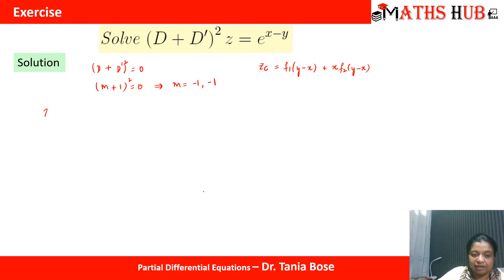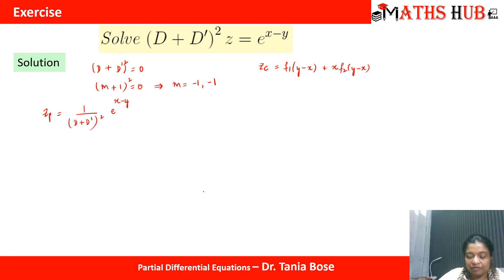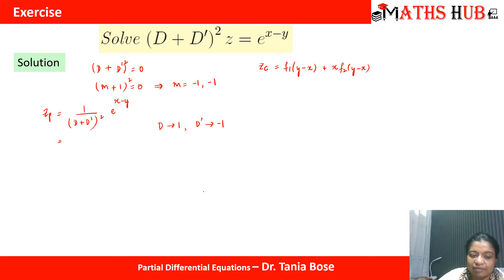Now let us calculate the particular solution: z_p = 1/(D + D')² · e^(x−y). We replace D with 1 and D' with −1. Substituting gives 1 − 1 = 0 in the denominator, which is a case failure. So we multiply by x in the numerator and take the derivative of the denominator with respect to D, giving 2(D + D').